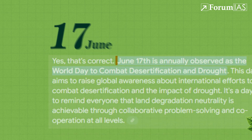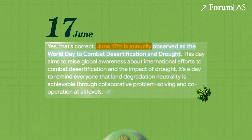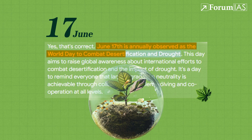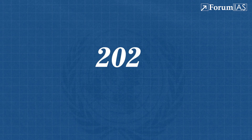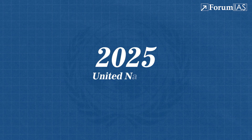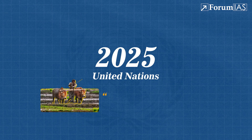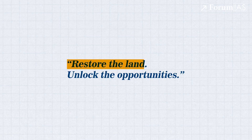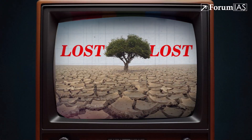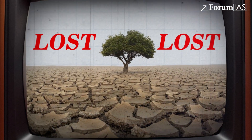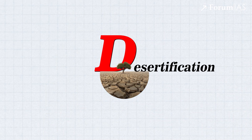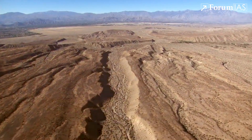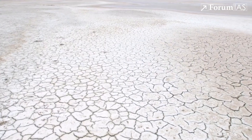June 17 is observed every year as the World Day to Combat Desertification and Drought, and in 2025 the United Nations has chosen the theme: 'Restore the Land, Unlock the Opportunities.' But what does it mean to restore land? It means we've already lost vast stretches of it to desertification, drought, and degradation.